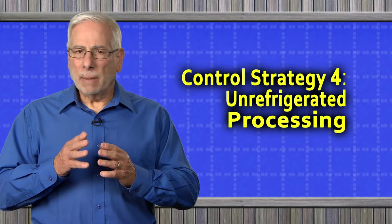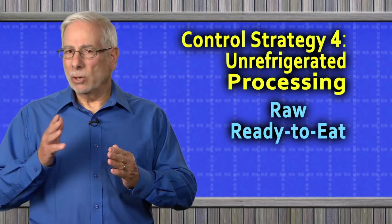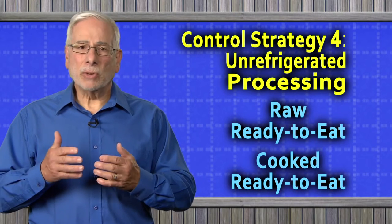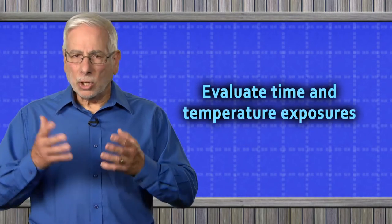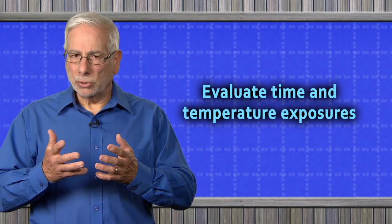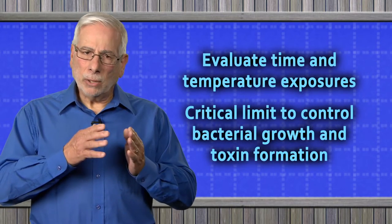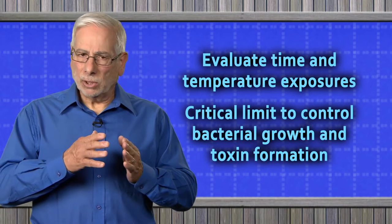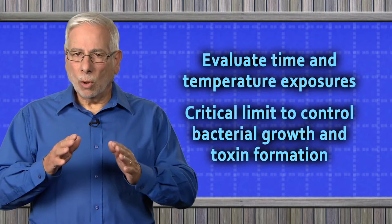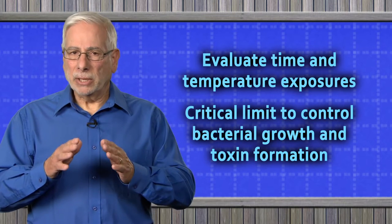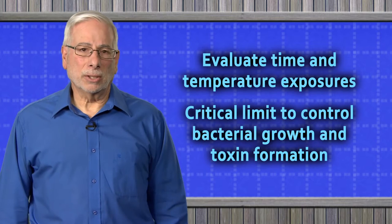In this video, we'll focus mainly on Control Strategy 4 for unrefrigerated processing. We'll use examples of raw ready-to-eat and cooked ready-to-eat products to demonstrate how to evaluate cumulative time and temperature exposures and select the appropriate critical limit option to control pathogenic bacterial growth and toxin formation in your process.